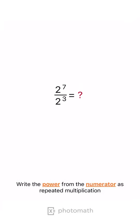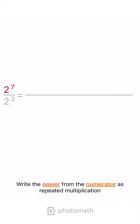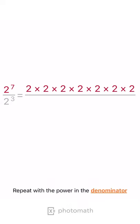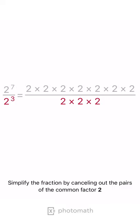Write the power from the numerator as repeated multiplication. Repeat with the power in the denominator. Simplify the fraction by canceling out the pairs of the common factor 2.